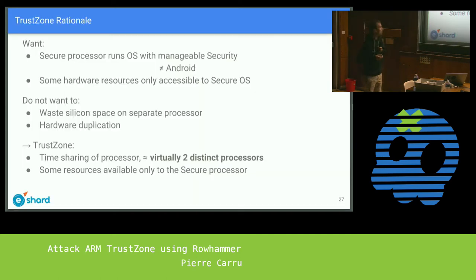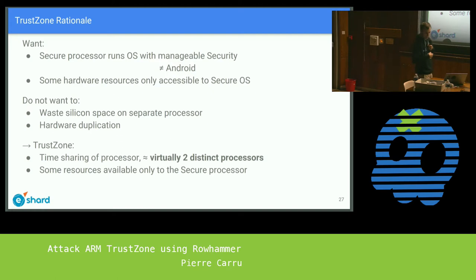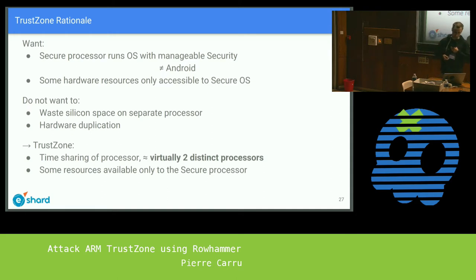TrustZone is a security technology built into all Cortex-A processors in smartphones. It's the equivalent of having a separate secure processor, but system integrators don't want two processors because of cost and silicon space. The basics are: you have one processor time-sharing between the non-secure side and the secure side. You have two OSes running — usually Linux, and a proprietary secure OS — and you schedule one or the other, similar to time-sharing between two user processes.